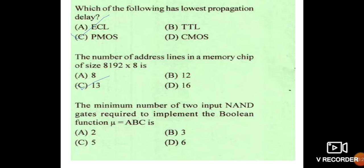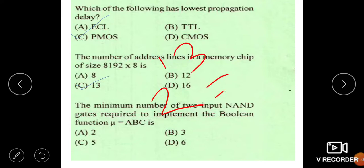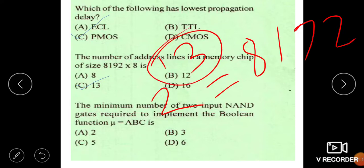Going to the next question. The number of address lines in a memory chip of size 8192 into 8 is... To convert this, 8192 into 8 is the total memory address. Here 8 is the data lines. And if we convert 8192 into power of 2, we get 2 to the power of 13, which equals 8192. So here 13 is the address line. Answer C is correct.